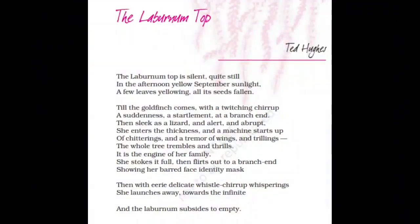Let us start the poem. 'Laburnum Top is silent, quite still in the afternoon. Yellow September sunlight, a few leaves yellowing, all its seeds fallen.' In the opening stanza, the poet describes the Laburnum tree and tells us there is no movement in it. It is silent and standing quite still. It is an afternoon in September, almost prior to autumn.